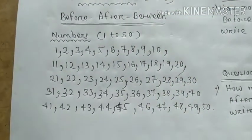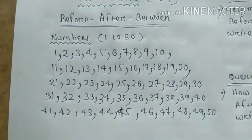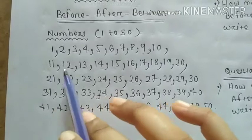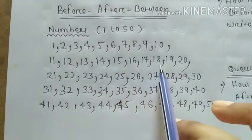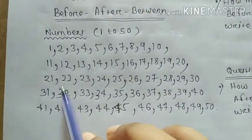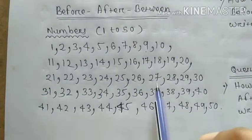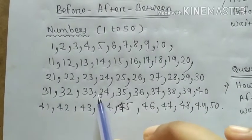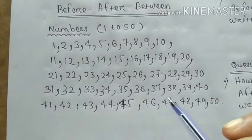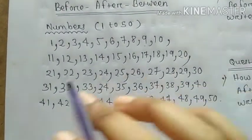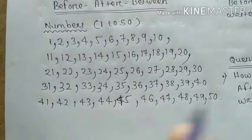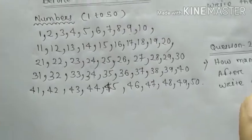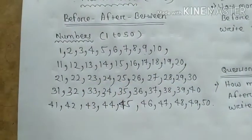There are some numbers between 1 to 50. 1, 2, 3, 4, 5, 6, 7, 8, 9, 10, 11, 12, 13, 14, 15, 16, 17, 18, 19, 20, 21, 22, 23, 24, 25, 26, 27, 28, 29, 30, 31, 32, 33, 34, 35, 36, 37, 38, 39, 40, and 41, 42, 43, 44, 45, 46, 47, 48, 49 and 50. There are numbers 1 to 50.